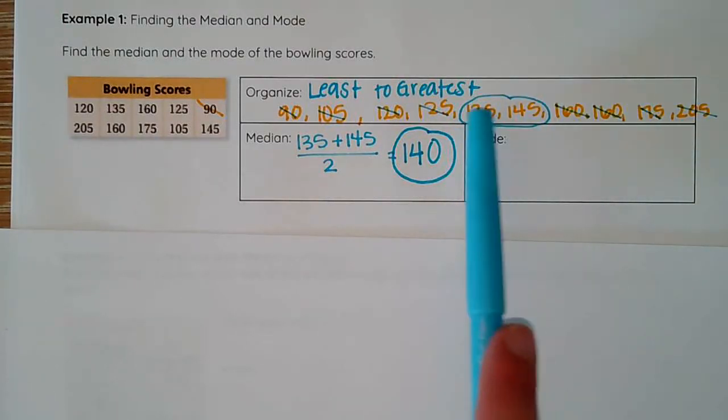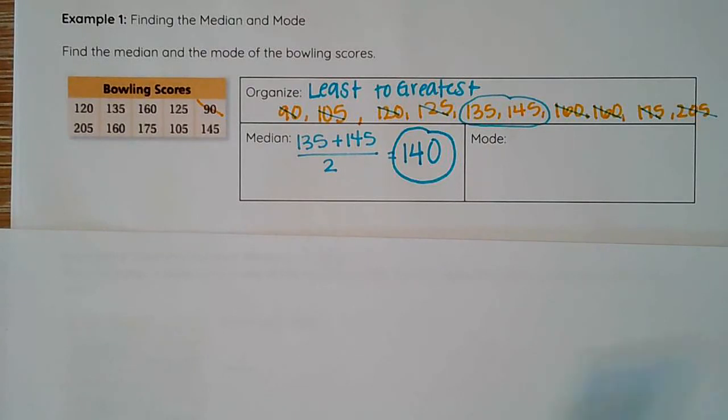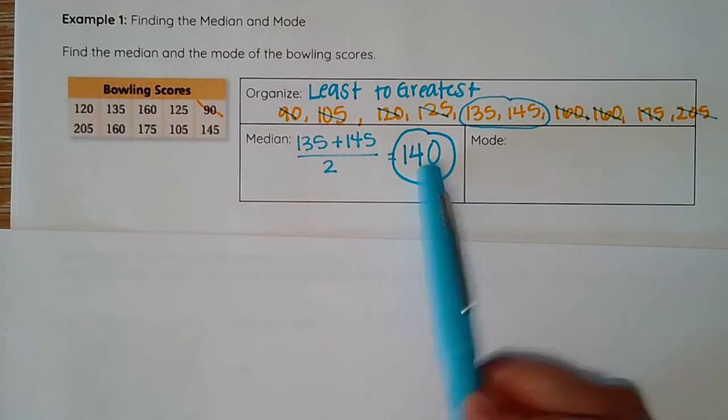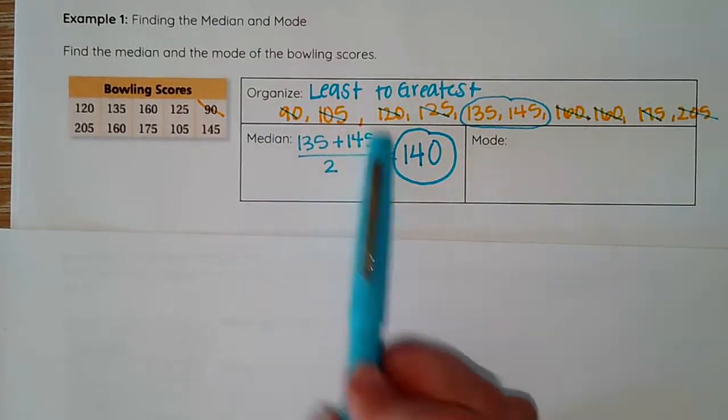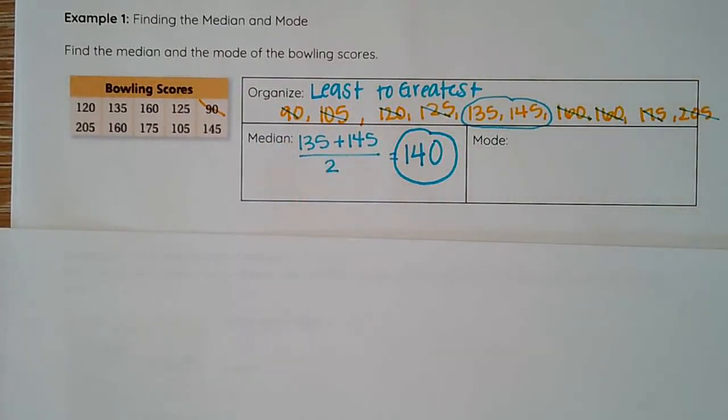My median here is the mean of 135 and 145, or you could see the middle point between those two. This one is a little bit easier; sometimes they get a little messy, so do know that you can use that mean formula. The middle of my data set is 140.